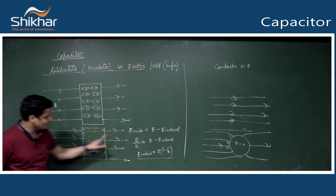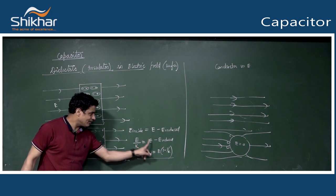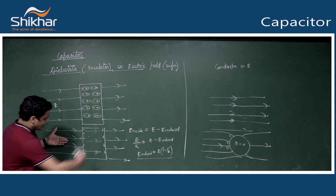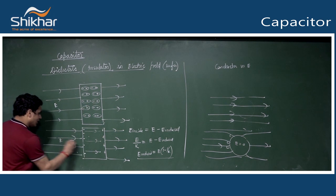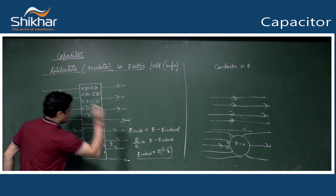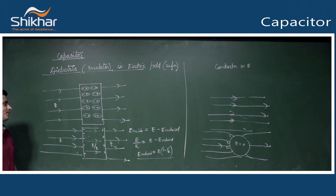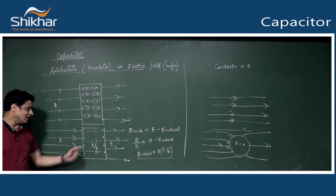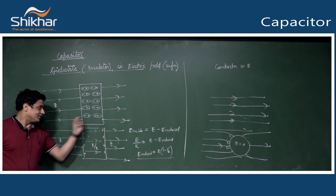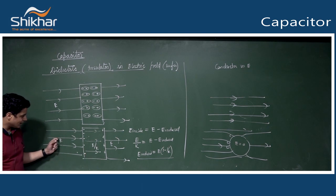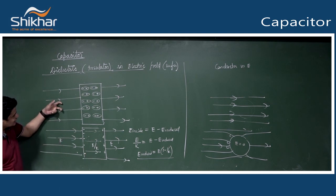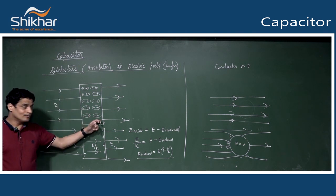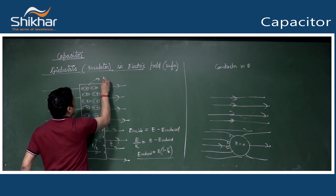Inside the dielectric, the electric field is K times smaller. The external field E and E(1-1/K) anti-parallel cancel appropriately, leaving E/K as the result. This can be asked as: explain why electric field inside dielectric becomes 1/K times. Answer: due to the external electric field, dipoles align - this process is called polarization.